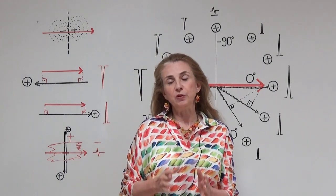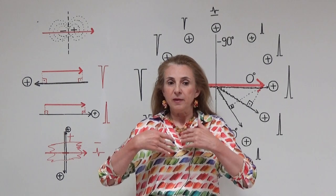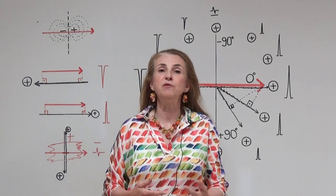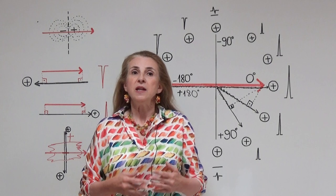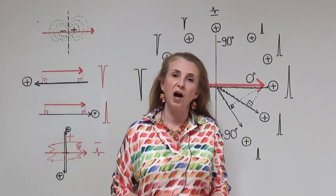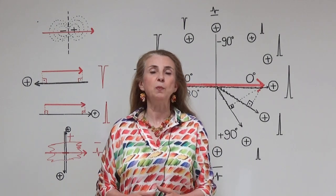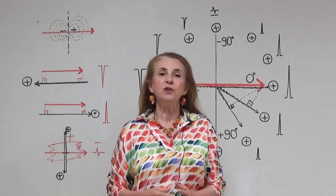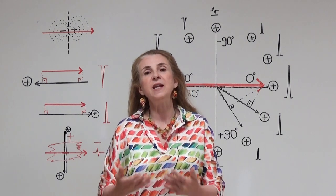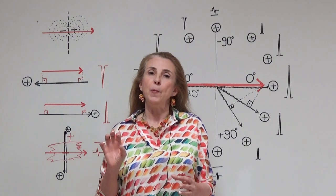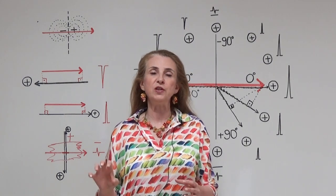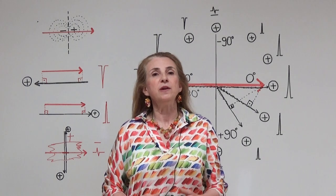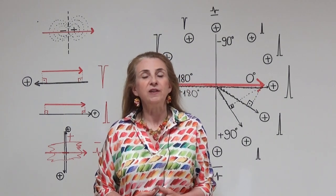When the action potential produced in the sinoatrial node is spreading to the rest of the heart, many dipoles form because it spreads in many directions. In other words, when the action potential is spreading, the position of the positive end of the dipole is continuously changing. This change and its effects on electrocardiography waves will be explained in the next video, where I will have an electrode placed in a constant position and explain the difference between waves formed by different dipoles.